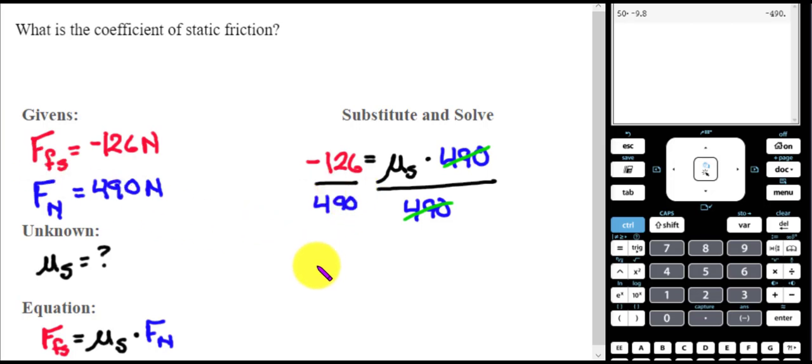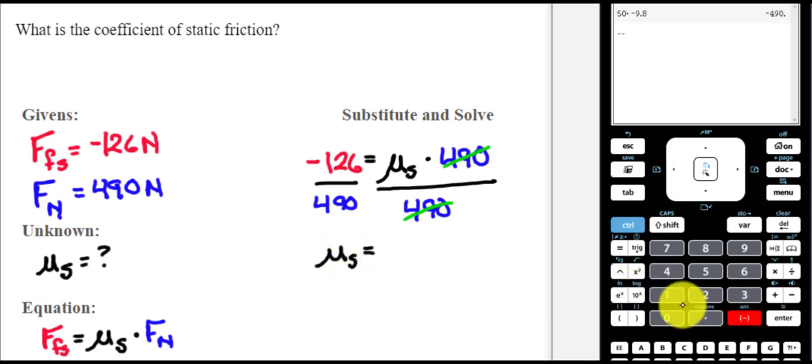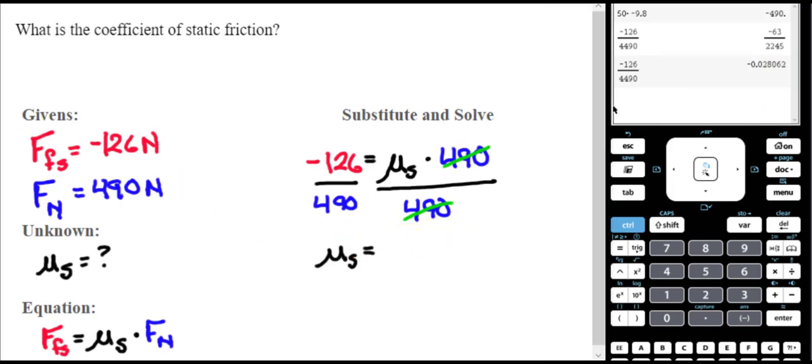And so in the end, I get mu static of negative 126 divided by 490. Now, I get this fraction that the Inspire offers me. I want to use the approximate button, so I'll hit the control blue and enter, and now it gives me a decimal, which is much easier to read, negative 0.028062.